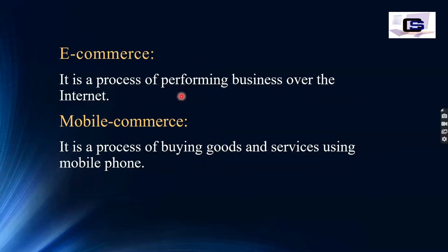The third one is e-commerce. It is a process of performing business over the internet. We use the internet to conduct business — this process is e-commerce. On the internet, we do online business and online shopping. For example, we shop online on platforms like AliExpress. This is also our e-commerce.